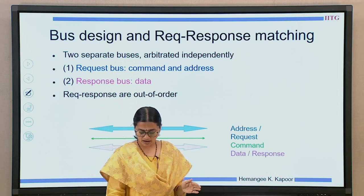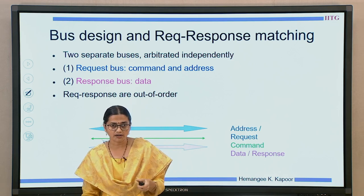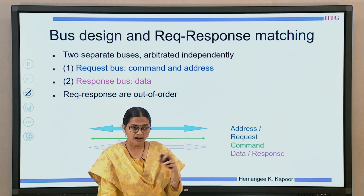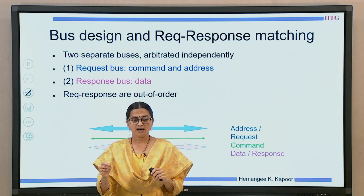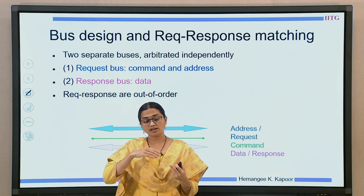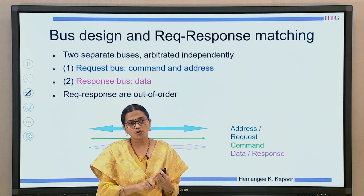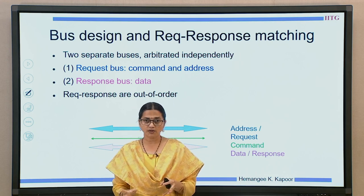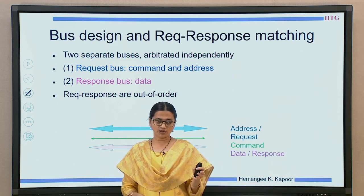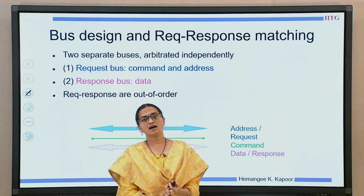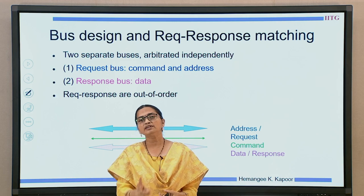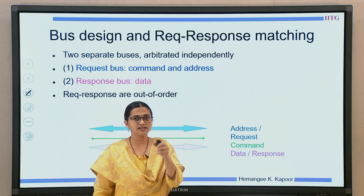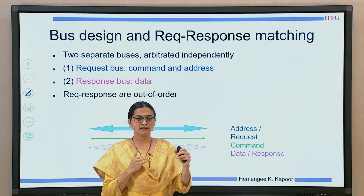The responses are out of order. If the response is out of order, you need to have a matching ID or tag associated with the request, because when you send a request the response comes much later. The response should carry information about which request it corresponds to. This depends on the number of pending requests — if I can handle 8 pending requests, I need 3-bit information to identify the response and request matching.